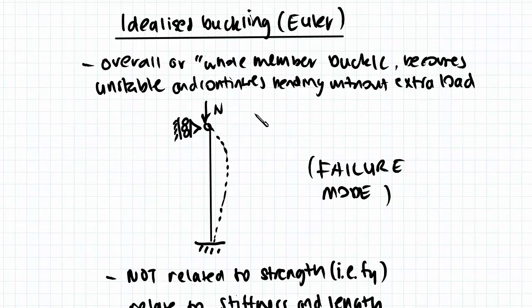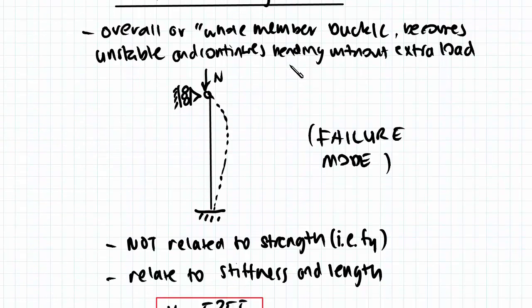An idealized buckling or flexural buckling would look something like this but will then propagate on without any added load.